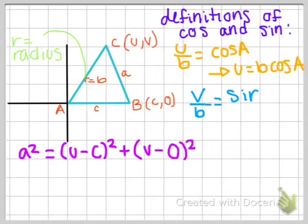So like I said earlier, cosine is the x value, so u over b is equal to cosine A. And for this one, you can cross multiply, so you pretend there's a 1 underneath the cosine A, and you get u equals b cosine A.